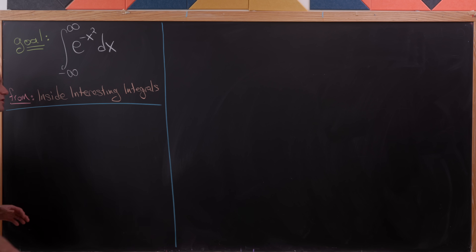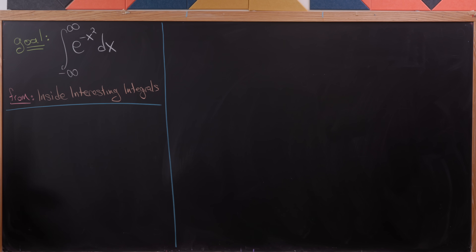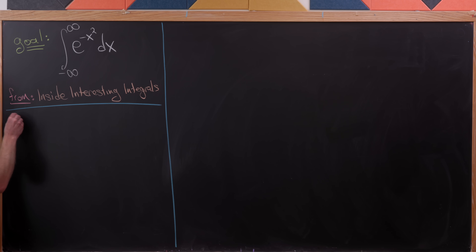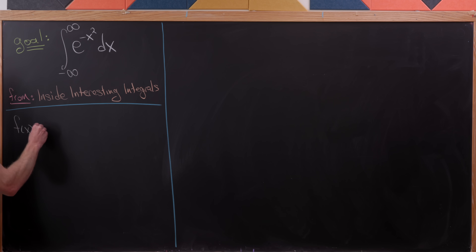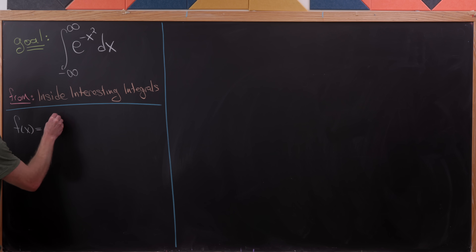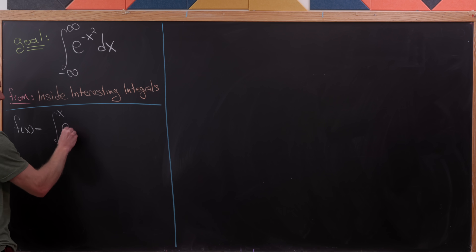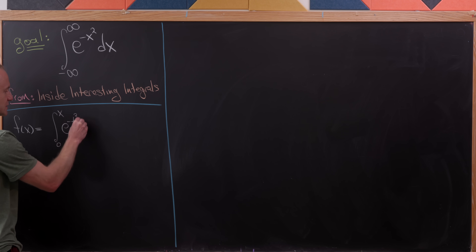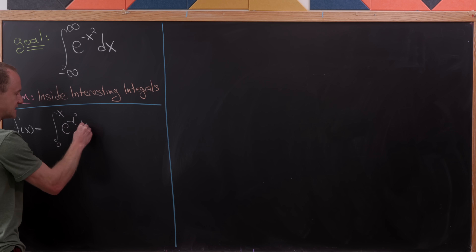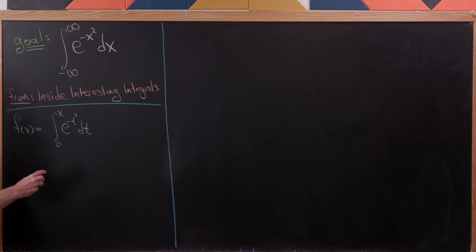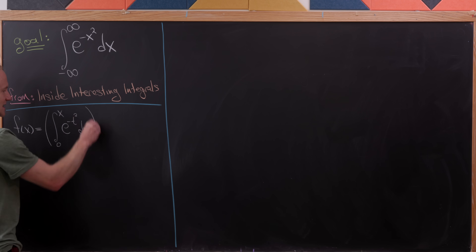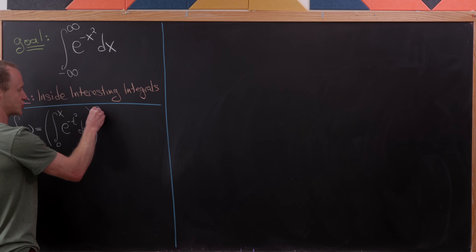The trick we'll use here is to involve two related functions. Let's first define a function f of x to be equal to the integral from 0 to x of e to the minus t squared dt — but it's not exactly that integral; it's this integral squared.